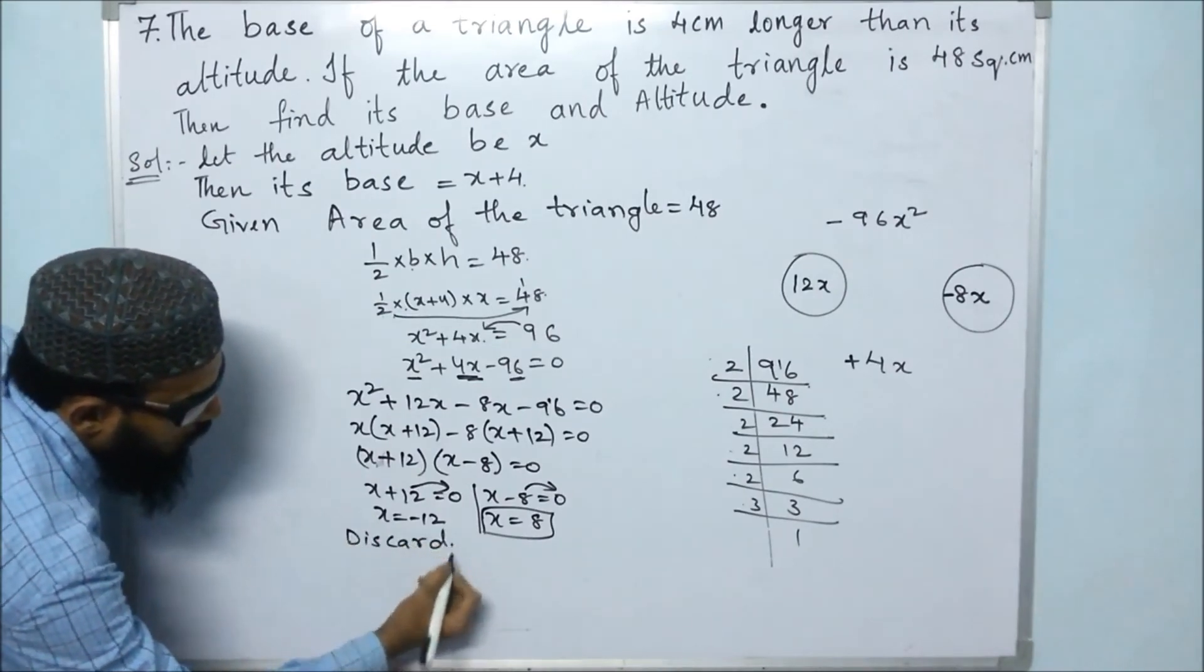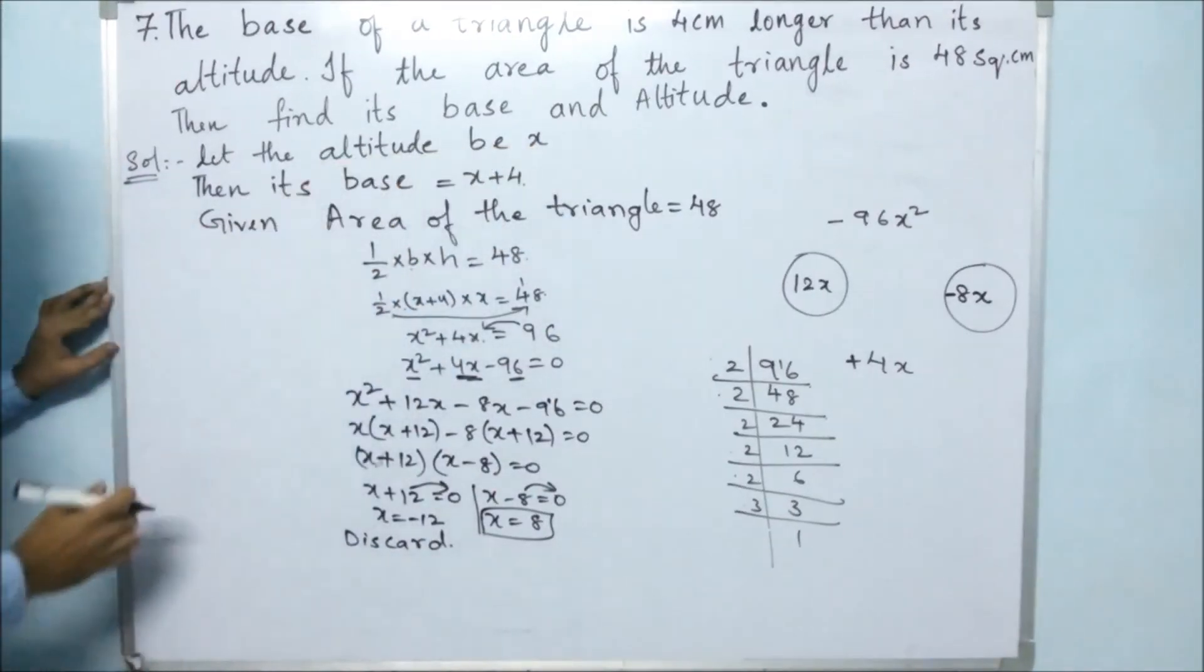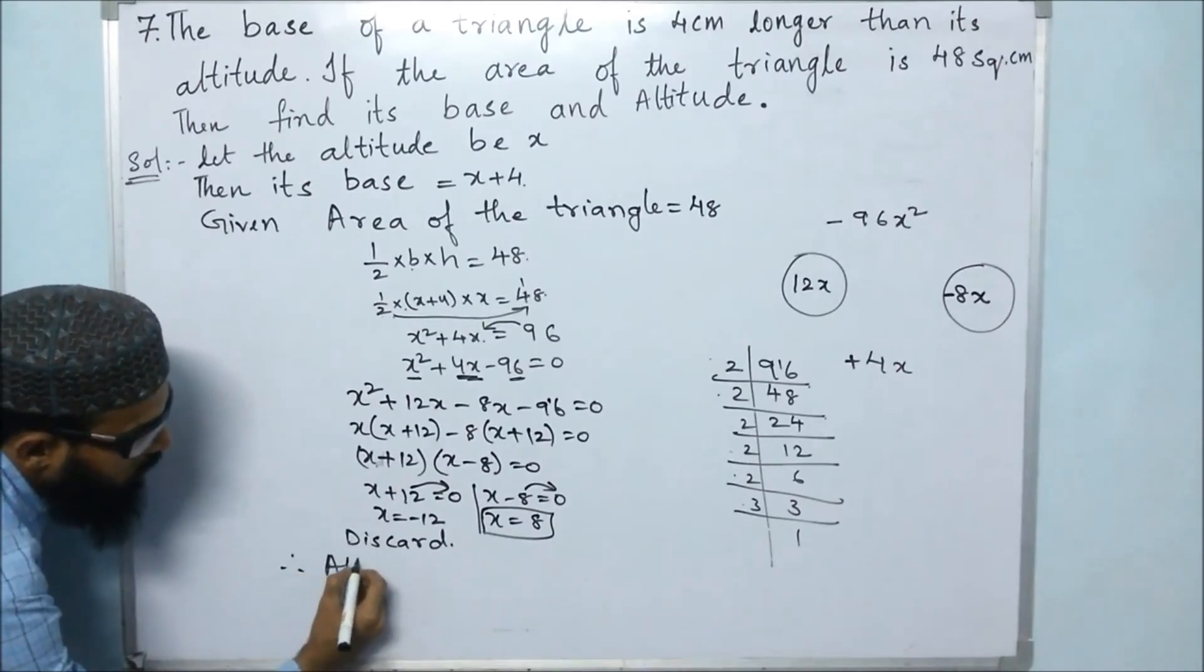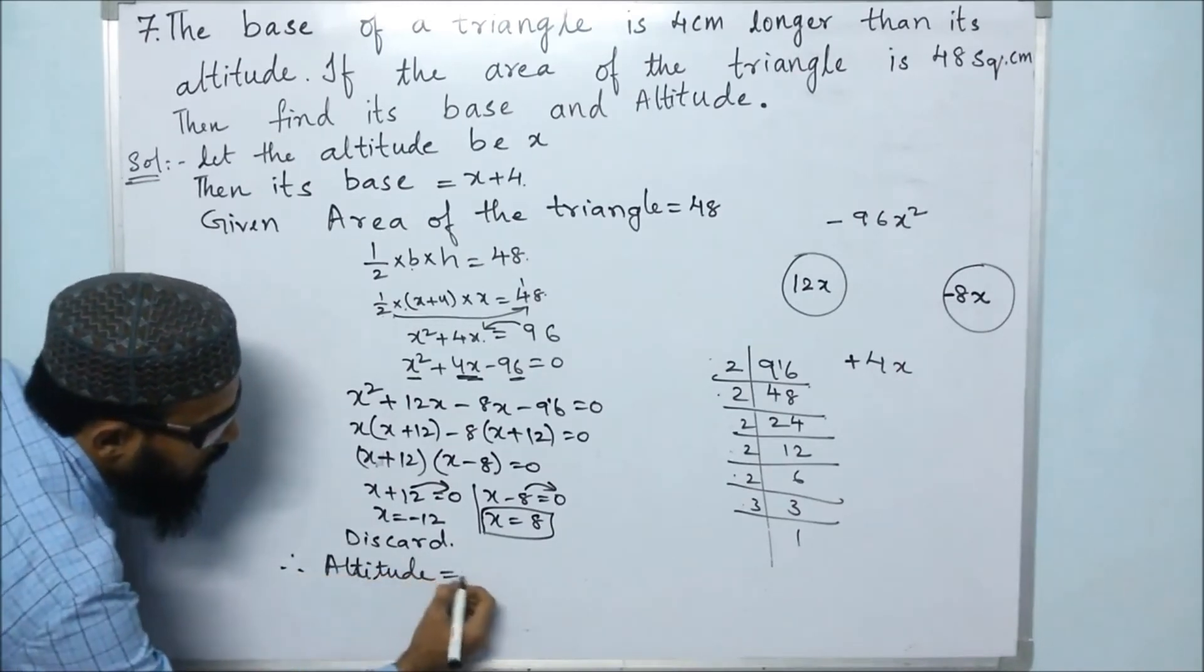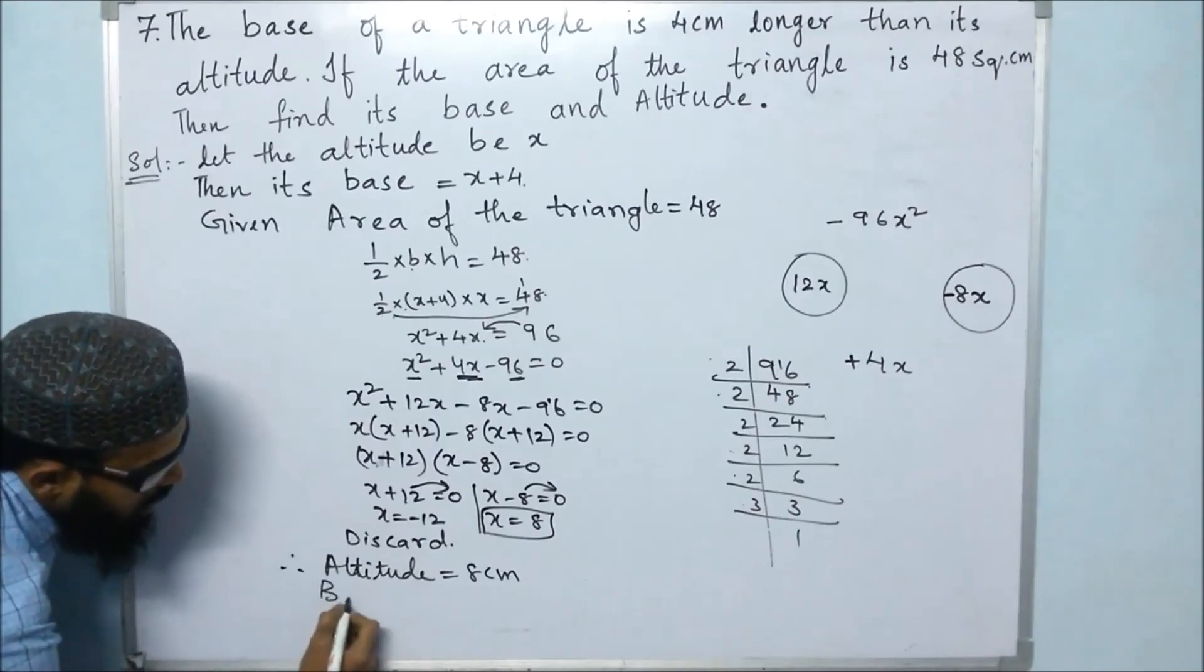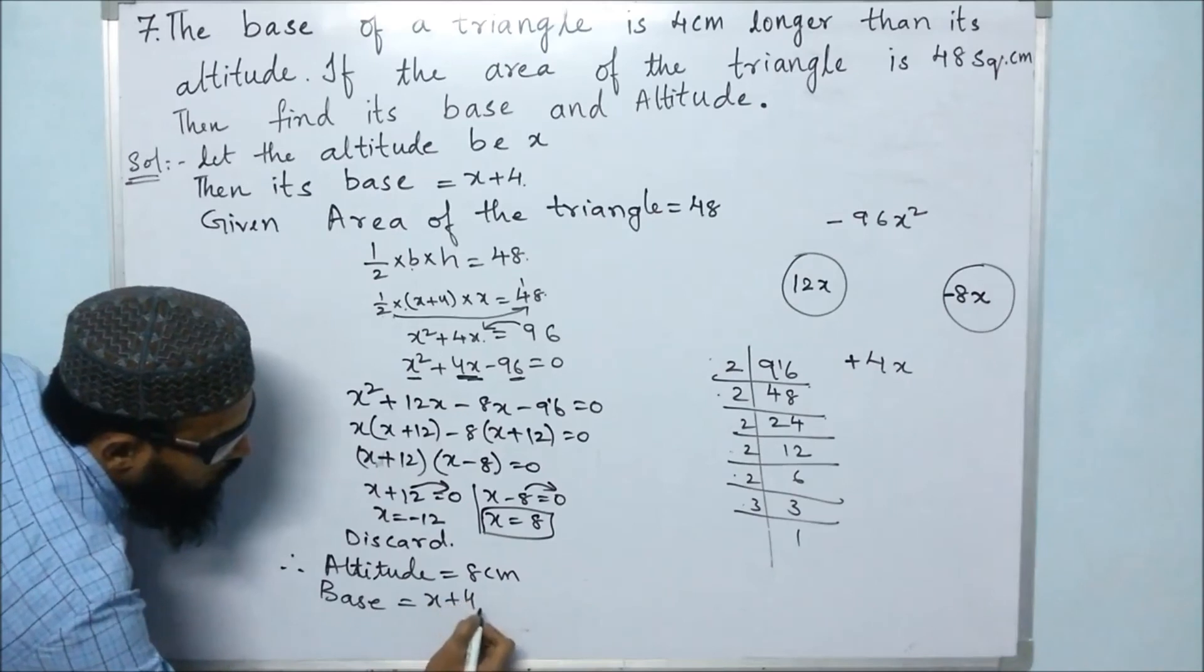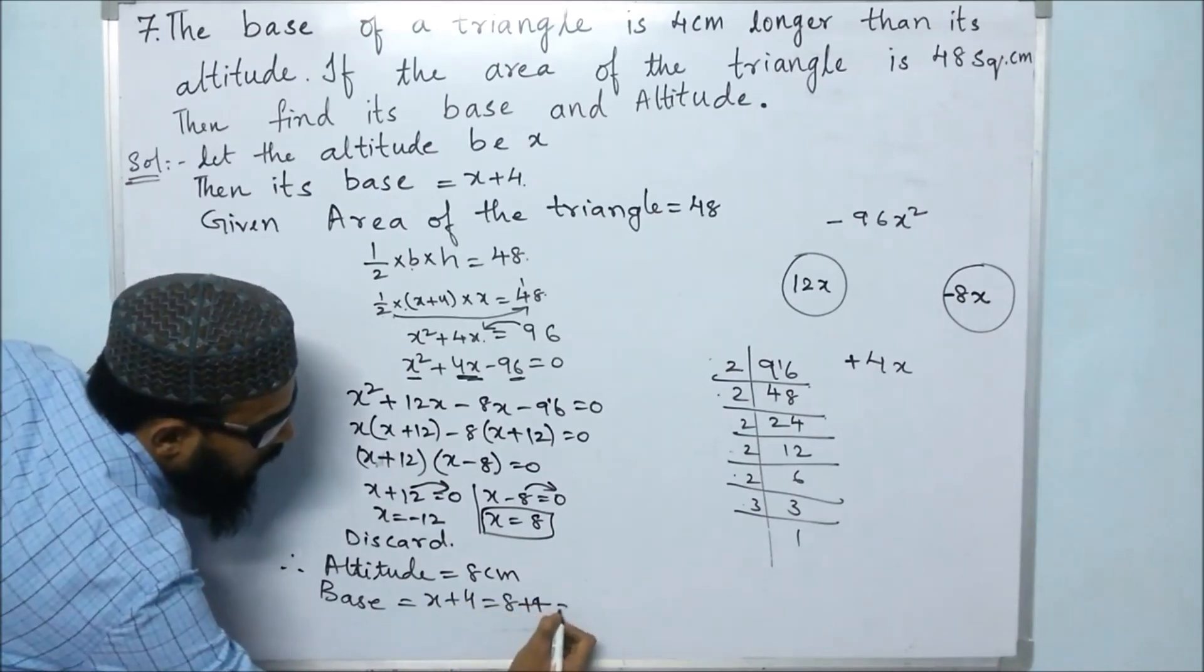What is this x? X is altitude. So therefore, altitude is 8 centimeter and base is x plus 4, so that is 8 plus 4. That will give us 12 centimeter.